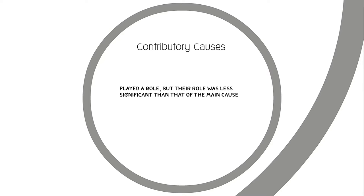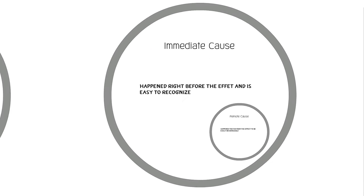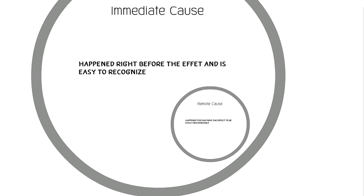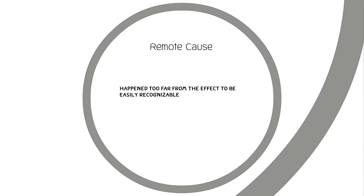Main causes and contributory causes are related by their significance to the event, but immediate and remote causes are related by the time between their occurrence and the occurrence of the event. An immediate cause is a cause that directly precedes the effect. Because it is so close by, it's pretty easy to recognize. A remote cause, on the other hand, happens well before the effect, so it may be harder to recognize.